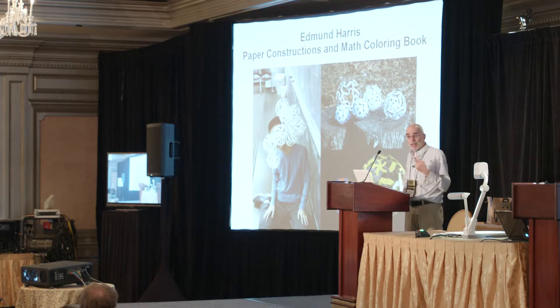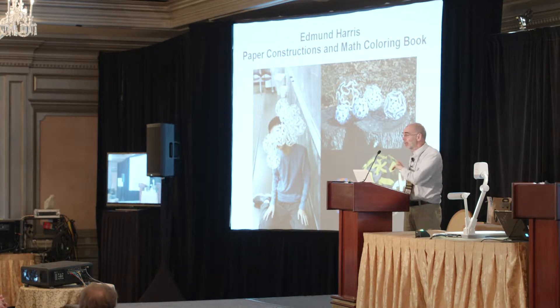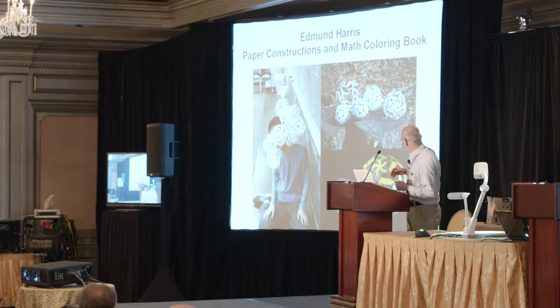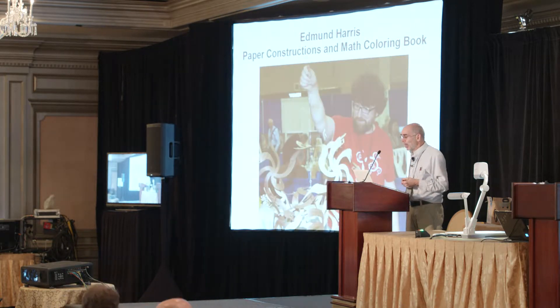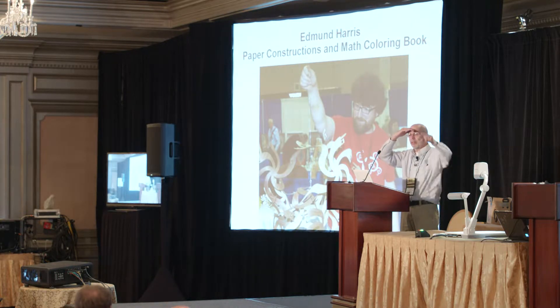Edmund Harris actually has two different tables. With Alex Bellos he made a coloring book they talked about earlier — there'll be pages from that and colored pencils if you want to color some in. Edmund will also be doing a paper construction: there'll be polygons, twisted shapes based on polygons of different N, which you can combine in different ways, including icosahedral ones. Look for Edmund and his table.